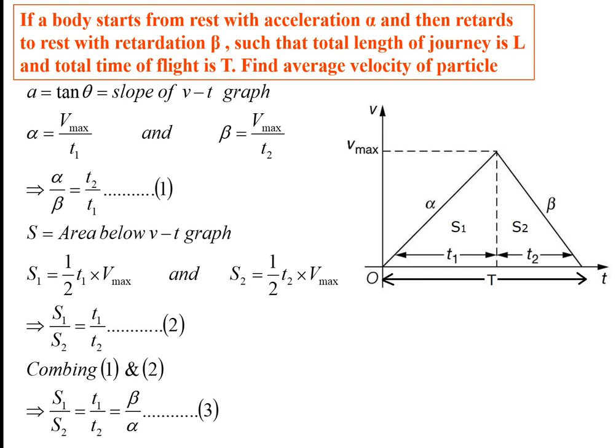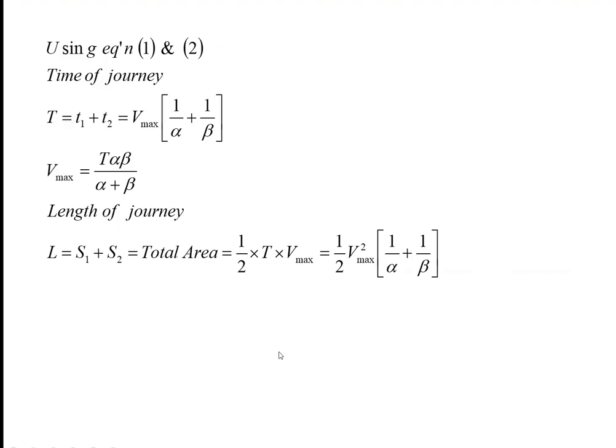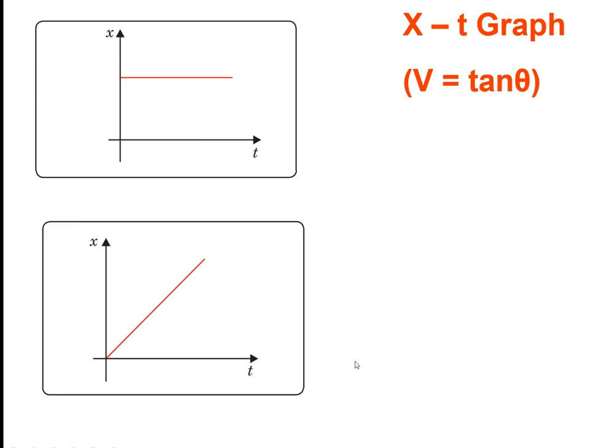Problem: an object starts from rest with constant acceleration α, then retards to rest with constant deceleration β. Total journey length is L and total time is T — find the average velocity. The slope of the v-t graph gives α and β; their ratio gives equation 1. The area under the v-t graph gives displacement, yielding equation 2. Adding the times gives total time T; total area gives L.